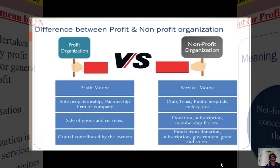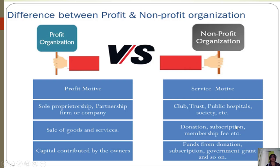Now, differences between profit organization and not-for-profit organization. Profit organization's main motive is profit motive, and not-for-profit organization's motive is to give services. Proprietorship, partnership firm, or company is an example of profit organization. Not-for-profit organizations — for example, sports clubs, all clubs, trusts, public hospitals, societies, schools, or colleges — are examples of not-for-profit organizations.